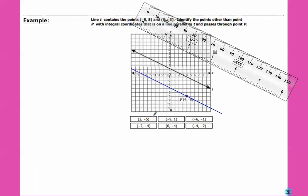So 2, negative 5, 2, negative 5. Yep, that's on my line. That's one of the answers I'm going to choose. Negative 9, 1. Not quite. Negative 6, negative 1. Yep, that works. Negative 2, negative 4. Not quite. Zero, negative 4. Yep. And negative 4, negative 2. Looks good. So those 4 are my answers.